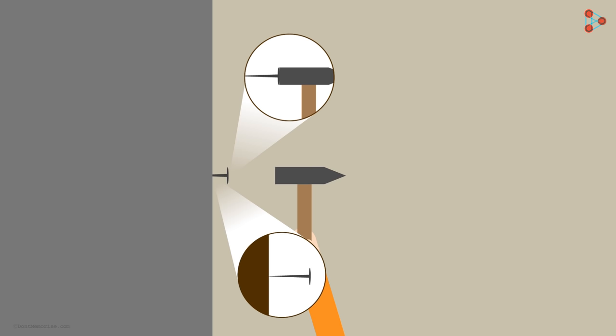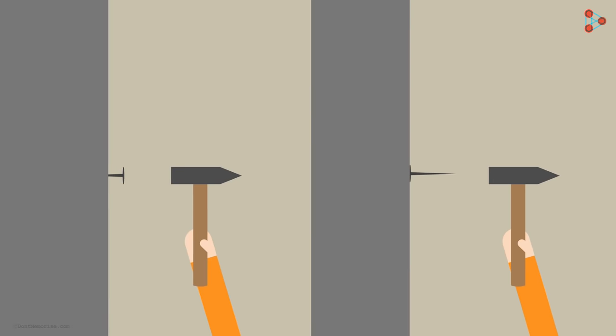Now let me ask you an interesting question. What will happen if you hammer the pointed side and try to pierce the flat side of the nail? You will find it difficult to push the flat face of the nail through the wall even if you apply more force than you did in the first case. What is the reason for this?